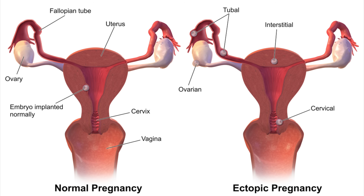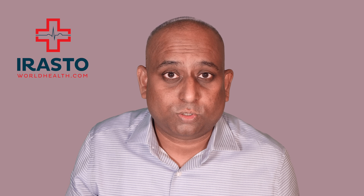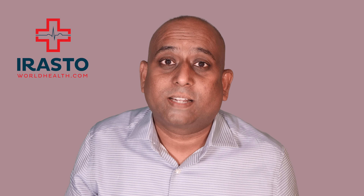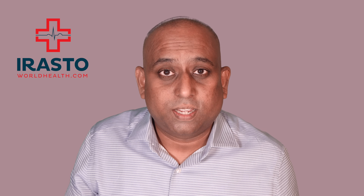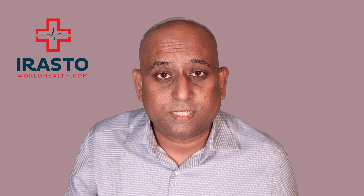Beta HCG can be elevated in conditions like ectopic pregnancy, hydatidiform mole, choriocarcinoma, pregnancy with Down syndrome, and spontaneous abortions. When pregnancy is outside the uterus it is called ectopic pregnancy. Sometimes the pregnancy cannot develop normally, resulting in a hydatidiform mole — just a mass of tissue. Lower levels of HCG are found in ectopic pregnancy and spontaneous abortion. To overcome all doubts about whether beta HCG is from an implanted embryo or another source, we proceed to transvaginal ultrasound.